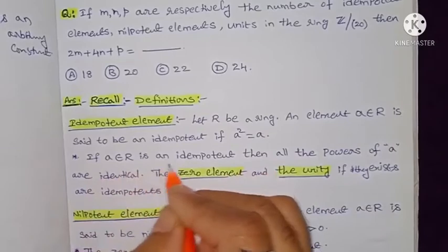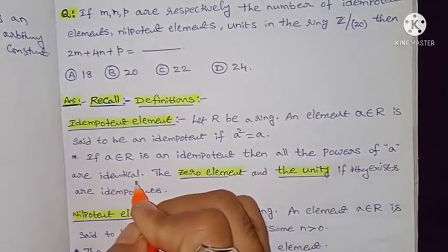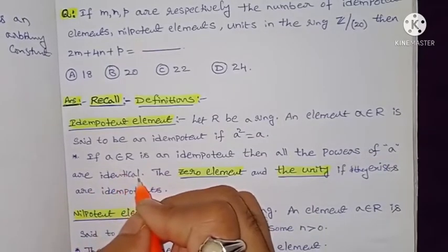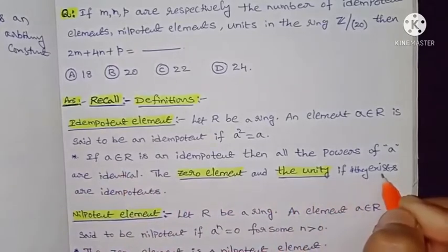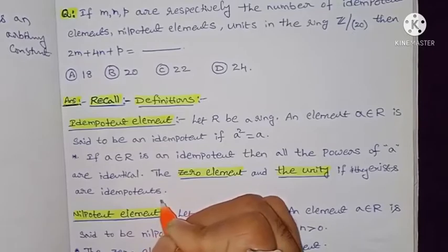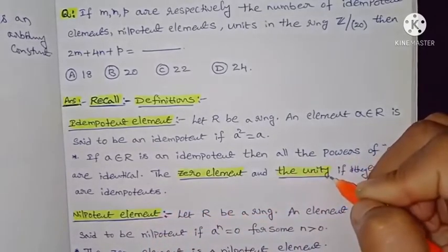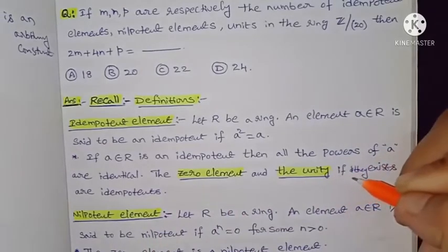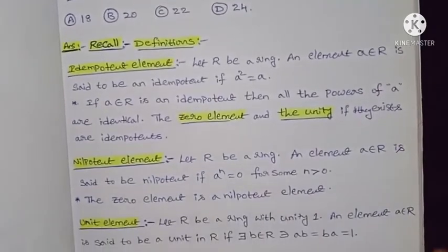An important note: if a belongs to R is idempotent, then all the powers of a are identical. Also, the zero element and the unit element (i.e., 1), if they exist in ring R, are trivially idempotent elements.